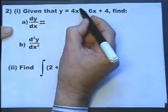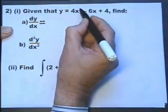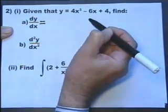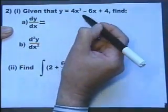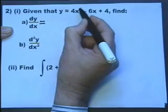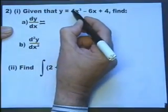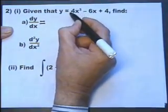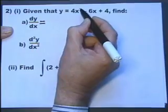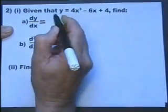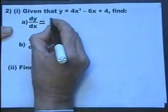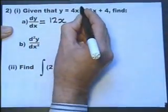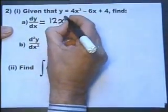We multiply that index — sometimes it's called an index, sometimes it's called a power — we multiply that index by the number in front, sometimes called the coefficient. 3 times 4 is 12, and drop that by 1 power.